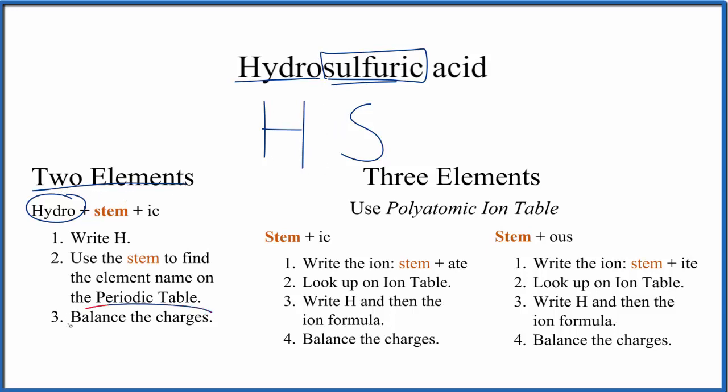Now we need to balance the charges. On the periodic table, sulfur has a 2- ionic charge. Hydrogen's in group one, so it has a 1+ charge. You can see we need two hydrogen atoms.